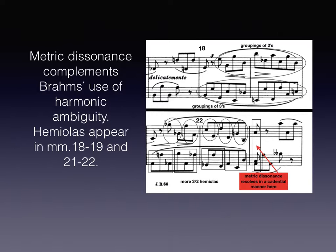As indicated here, the metric tension and release plays a role in the usage of harmonic consonance and harmonic dissonance as well. You'll note here that in measure 23, the duplet-triplet tension resolves on the downbeat of measure 23 at the same point that cadential resolution is achieved.